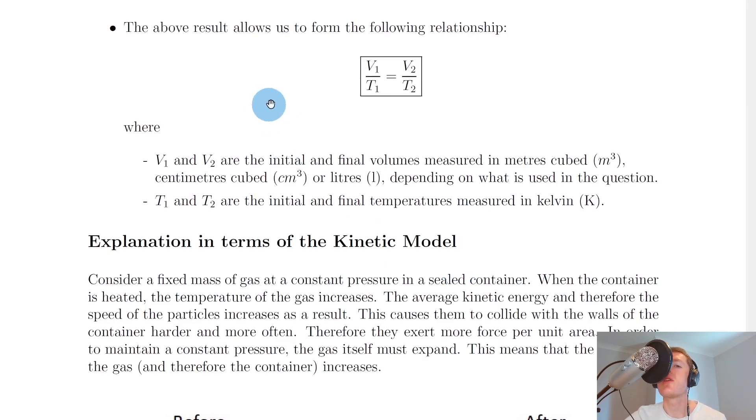So this allows us to form the following relationship here. So we have V1 over T1 equals V2 over T2. So remember, just like for Boyle's Law and Gay-Lussac's Law, whenever we have something equals a constant, we can just make that thing equal to the thing itself. So V over T is equal to V over T.